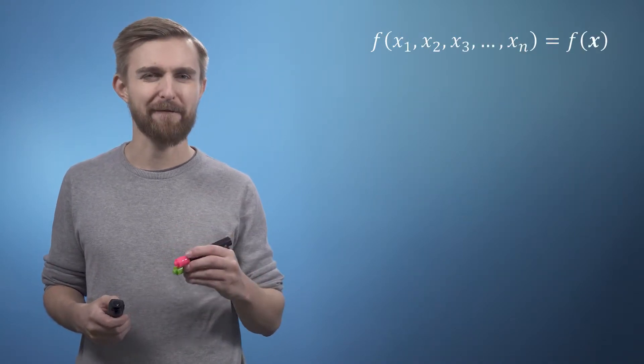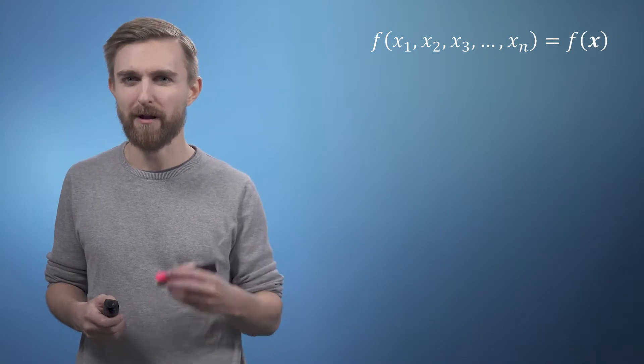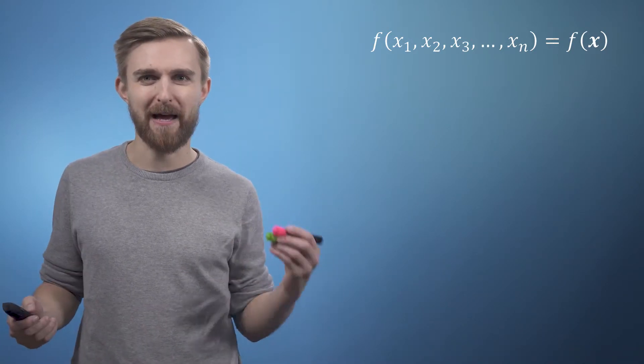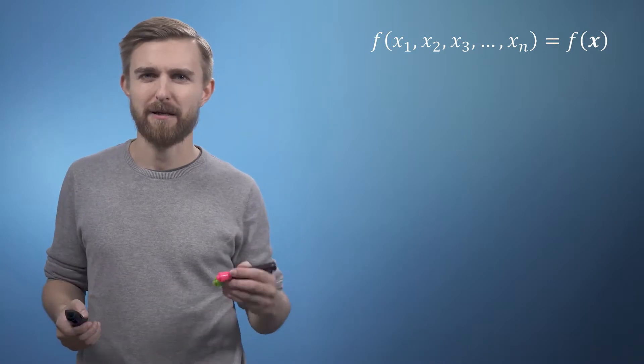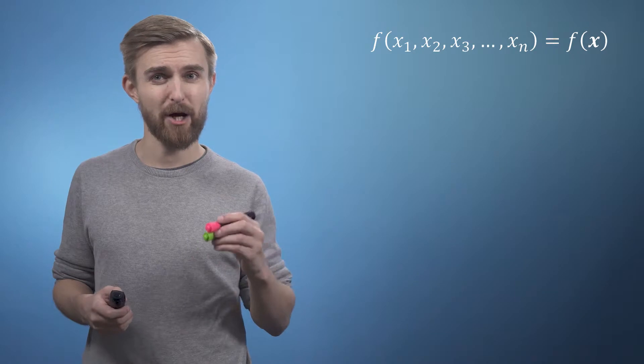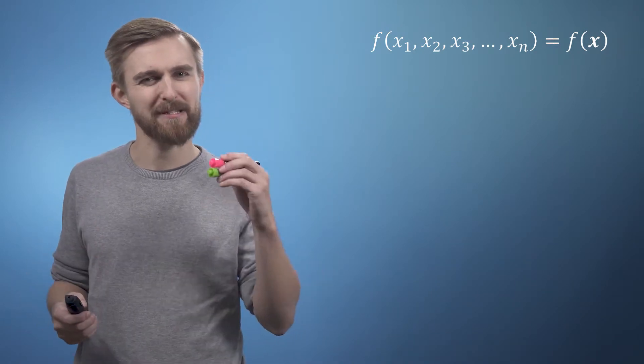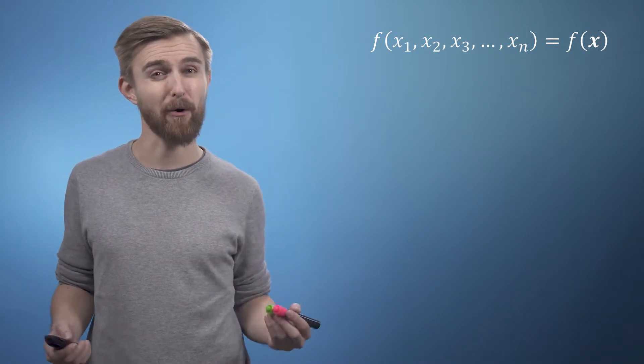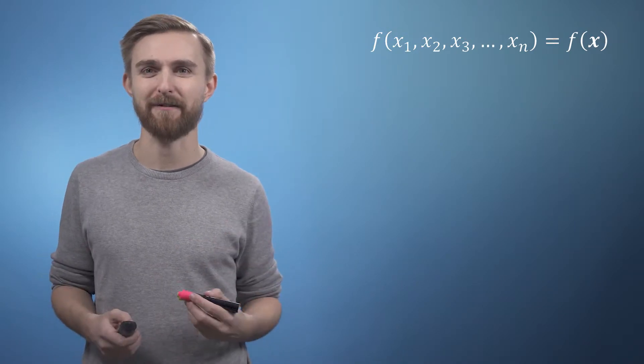If we had a function f of n variables, x1, x2, x3, all the way up to xn, I can write this as just f of x, but now you'll notice that I've written the x in bold. Just to help you remember that this x represents a sequence of variables, which we'll now more conveniently think of as an n-dimensional vector.